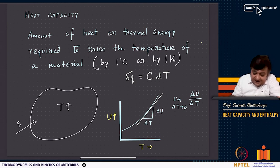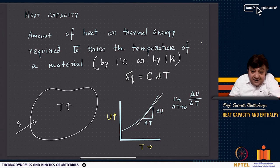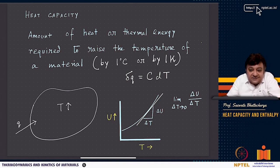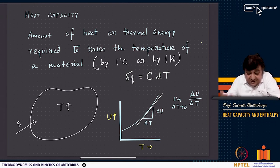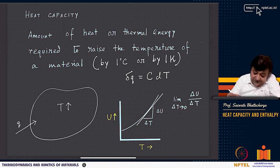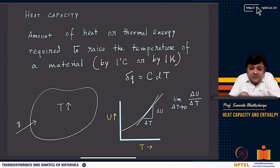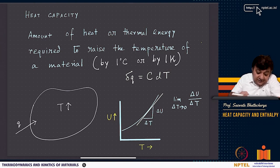At constant volume, the heat capacity C_v = (delta q_v / dT) = (∂u/∂T)_v. This is the change in internal energy with temperature at constant volume. At constant pressure, enthalpy is the relevant quantity, and C_p = (∂h/∂T)_p — the change in enthalpy with temperature at constant pressure.